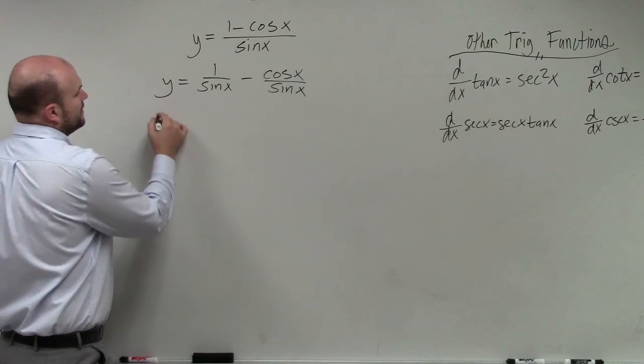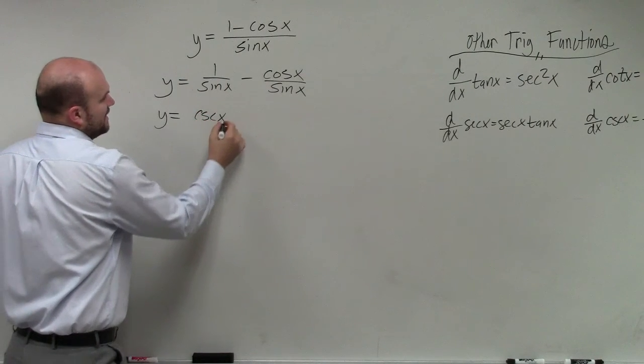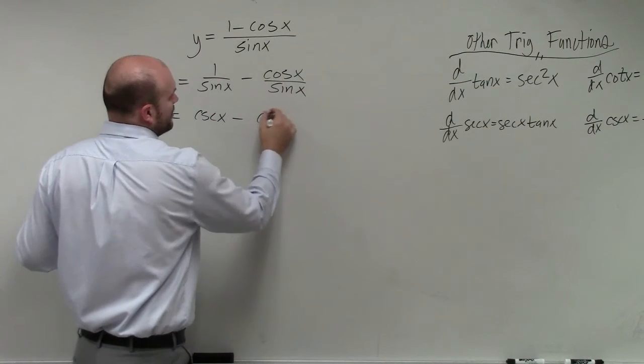And then using our understanding of our trigonometric functions, this is cosecant of x, this is cotangent of x.